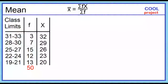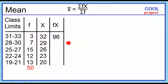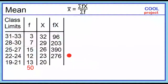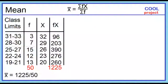Next, multiply each of the class marks by each of the corresponding frequencies — add an fx column. 3 times 32 is 96. 7 times 29 is 203. 15 times 26 is 390. 12 times 23 is 276. 13 times 20 is 260. The sum is 1225. The mean is equal to 1225 divided by 50, which equals 24.5.